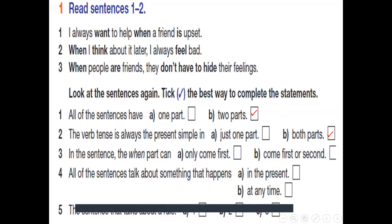In this sentence, the 'when' part comes only first, or comes first or second? Comes first or second. So it's B. All the sentences talk about something that happens in the present or at any time. Of course, things that can happen at any time. The sentence that talks about a rule is the third sentence. This is a rule. It always happens. When people are friends. If people are friends, they don't hide their feelings. So it is C for sentence number three.